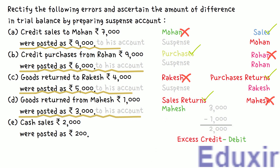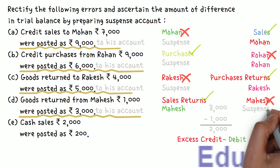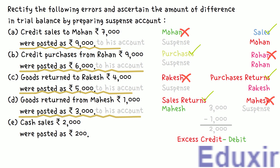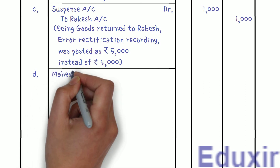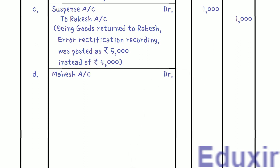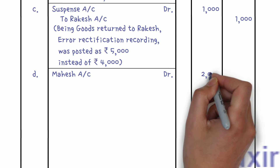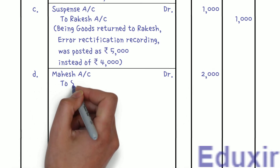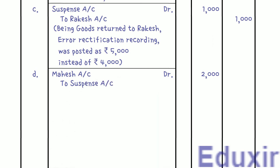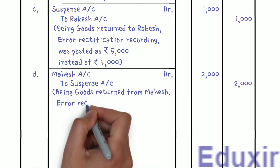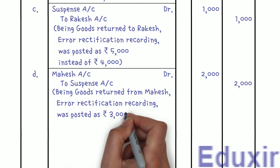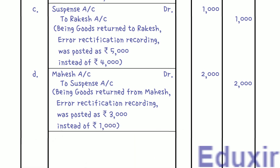Since there is an excess credit, we post the rectification entry on the other side — the debit side. So we debit Mahesh's account with 2,000 rupees. As this is a one-sided error, the suspense account is credited. Journal entry: Mahesh's Account Dr. 2,000 rupees; To Suspense Account 2,000 rupees. Narration: Being goods returned from Mahesh — error rectification recording — was posted as 3,000 rupees instead of 1,000 rupees.